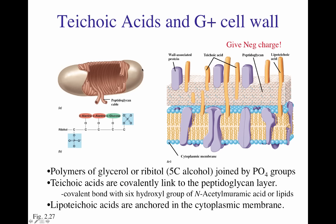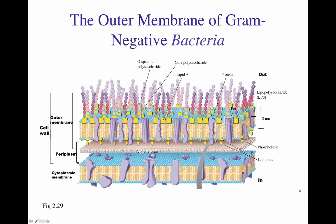One thing we have been able to show is that the peptidoglycan layer in gram-positive microorganisms can be formed by peptidoglycan cables that are distributed along the structure of the microorganism, as shown in figure 2.27, in the upper structure.